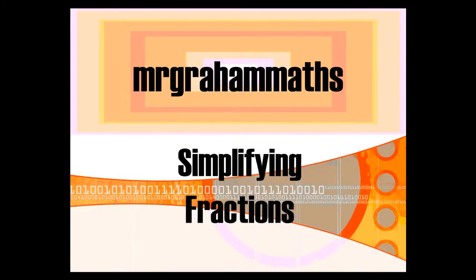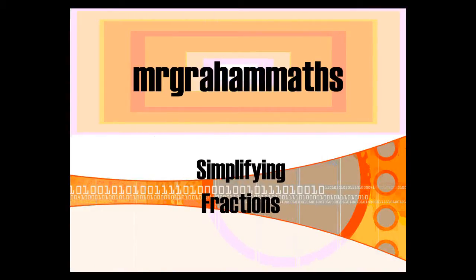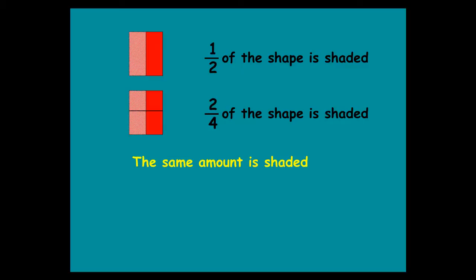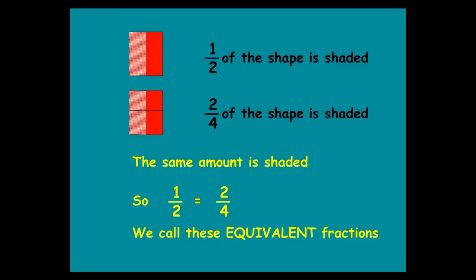In this video, we're going to have a look at simplifying fractions. Now, if we have a look at this picture here, you'll see that half of the shape is shaded. And if we draw the same shape, it's the same amount that's shaded. But if we split the shape up into 4, we can say that 2 quarters of the shape is shaded. So, because it's the same amount that's been shaded each time, we can say that half and 2 quarters have the same value, and the name given to two fractions which have the same value is that they are equivalent fractions — they are equal to one another.